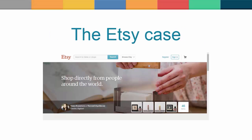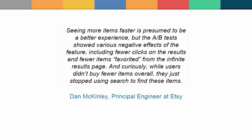Etsy spent months developing and testing infinite scroll for their search listings, only to find that it had a negative impact on engagement. Finally, it was removed from the site after the number of clicks on favorites decreased and the search function was no longer used. McKinley noticed how infinite scroll failed in every major way. Seeing more items faster is presumed to be a better experience, but A-B tests showed various negative effects, including fewer clicks on results and fewer items favored from the infinite results page. Curiously, while users did not buy fewer items overall, they just stopped using search to find these items. If you want to know more, you'll find a list of useful links at the end of this video.